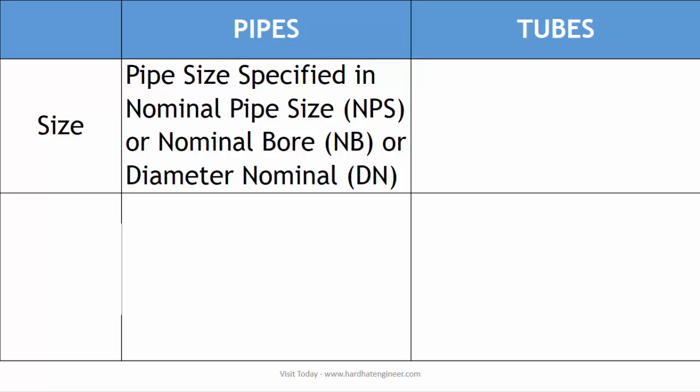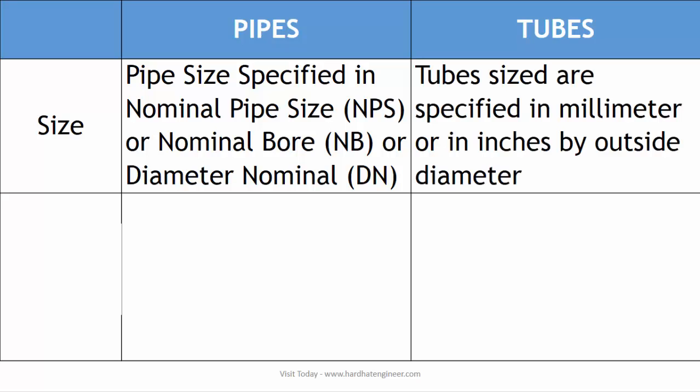ASME B31.3 process piping code, B31.1 power piping code, and ASME Section VIII pressure vessel design code, use the term NPS—that is, Nominal Pipe Size—to define the diameter of the pipe. Whereas in the case of tubes, tube size is defined in a fixed number, either in millimeters or in inches.